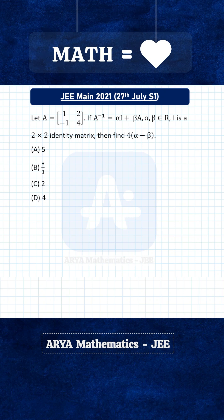A is this 2×2 matrix. If A inverse is α·I + β·A, where α and β are real numbers and I is a 2×2 identity matrix, then we have to find the value of 4α - β.